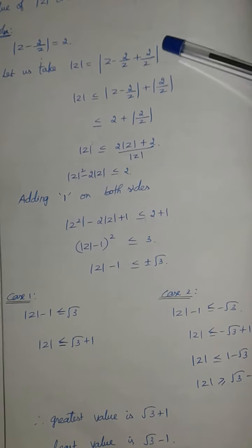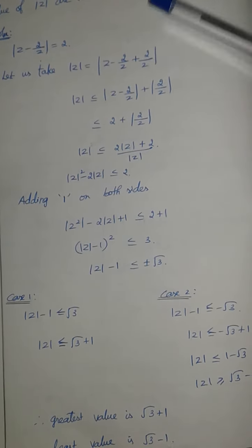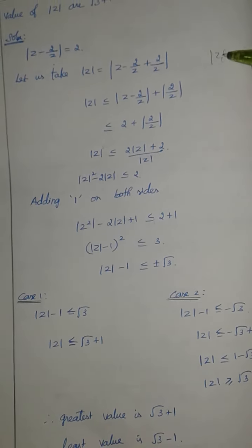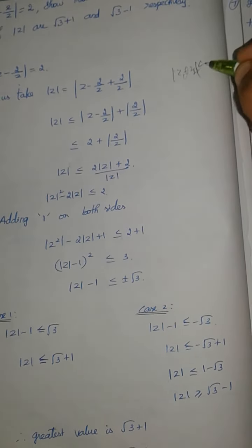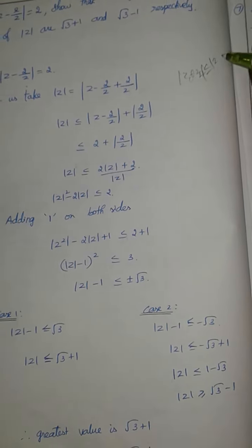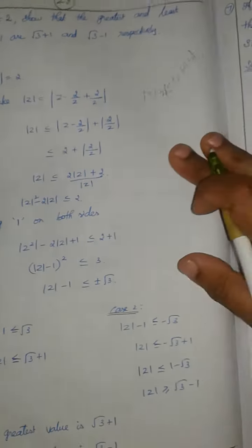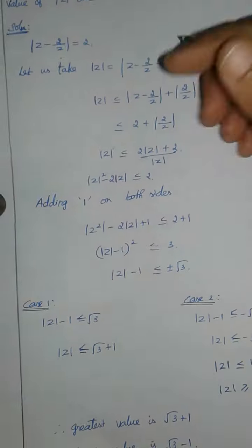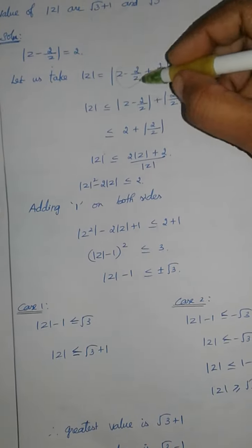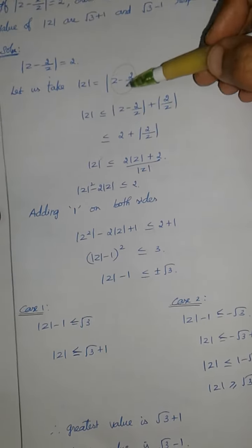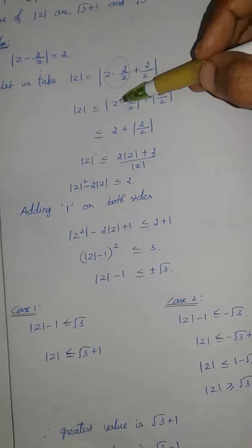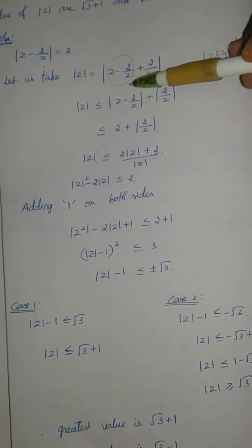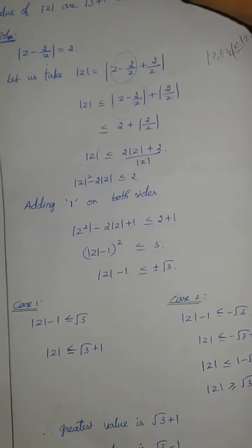Now, the concept we use is the triangle inequality: modulus of Z1 plus Z2 is less than or equal to mod Z1 plus mod Z2. Applying this, modulus of Z minus 2 by Z plus modulus of 2 by Z. This value is given as 2.